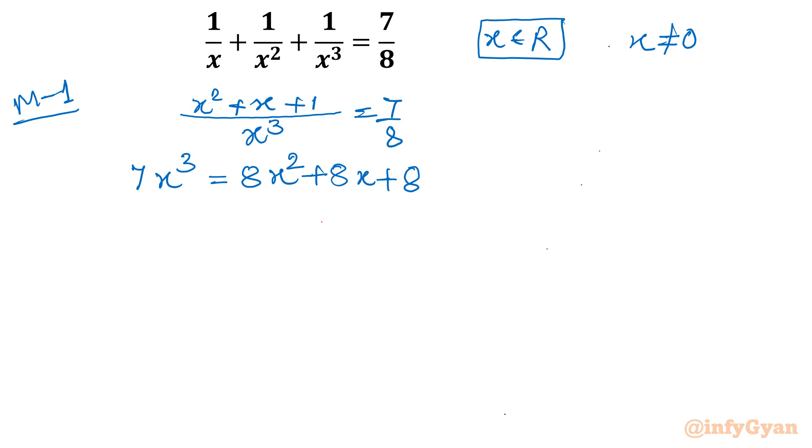Using factorization and remainder theorem I am showing today. 7x cube, 8x square, 8x, 8. Let me write all the terms to left, or I am going to directly split this 8x square into 14x square minus 6x square. Now one question would be there: how would we know? And this 8x we are going to split 12x minus 4x.